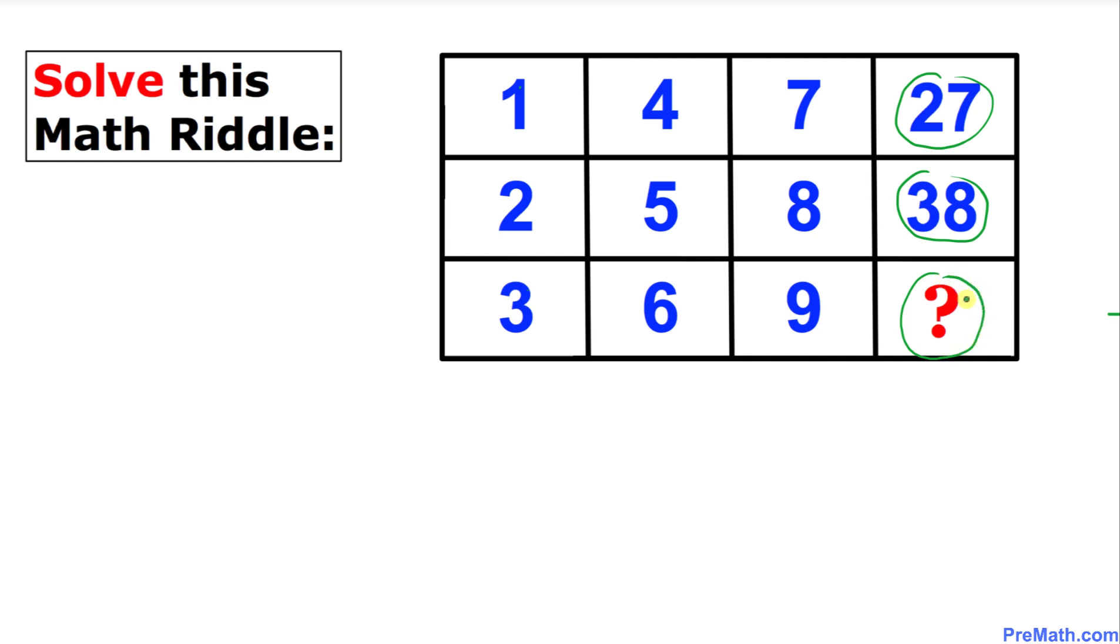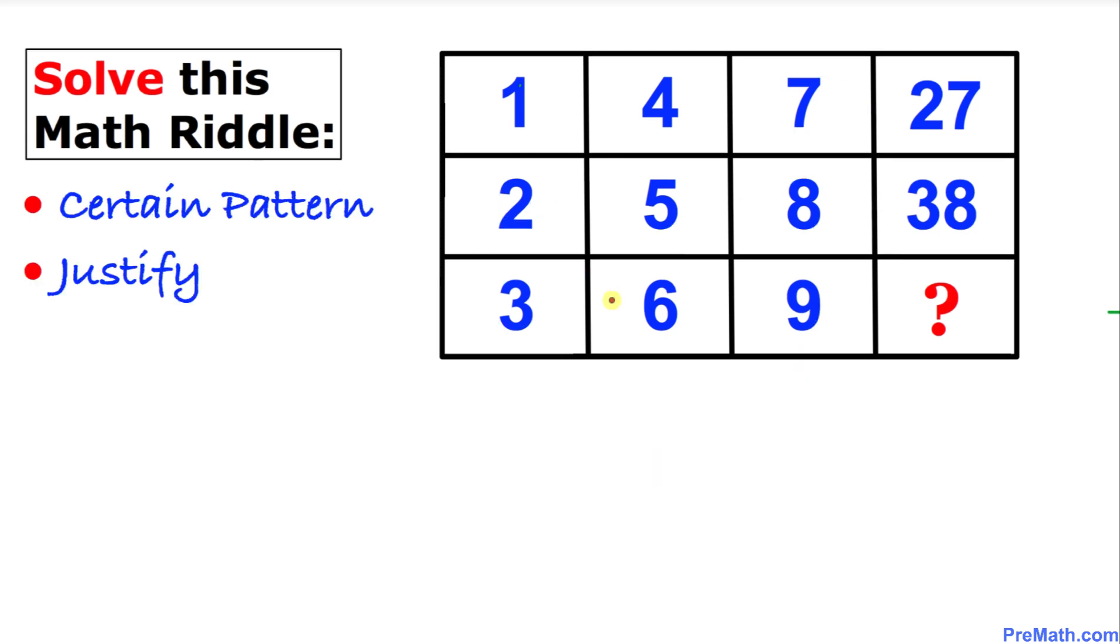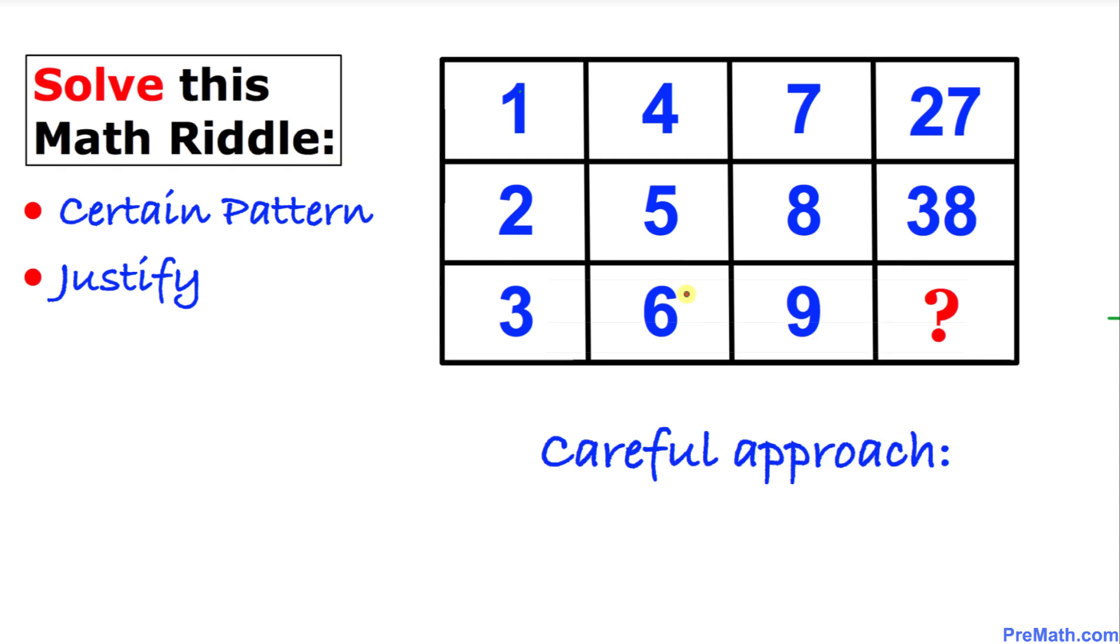If we take a casual kind of approach, then we can see that this 2 and 7 over here is going to give us 27 here, 3 and 8 is going to give us 38. And likewise, we have to be very careful with our approach. We make sure that we get a certain pattern and whatever we get we have to justify that. So let's go ahead and look into this problem carefully.